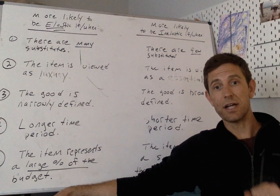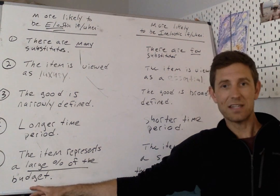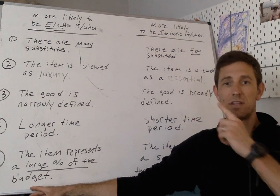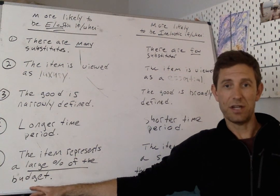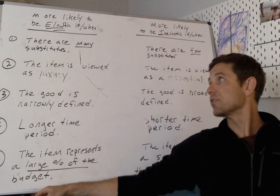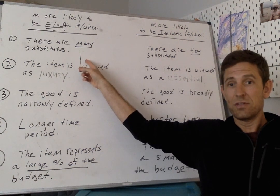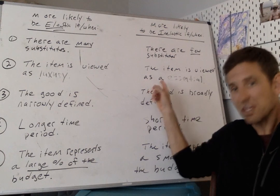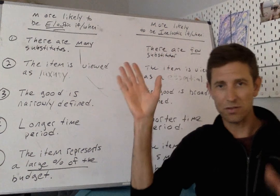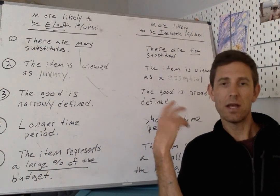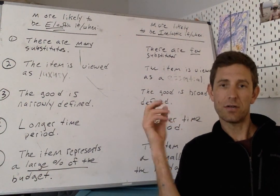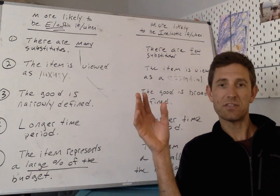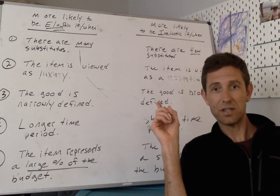Alright, so there you go. Those are the five criteria that you guys should know about. One last thing here to keep in mind is that it's possible that the different criteria can give you a different suggestion about elasticity of the good. In other words, you could have an item for which there's many substitutes and it's suggesting that it's elastic, but it's also something that people view as essential, suggesting it's inelastic. And so the rules of thumb sometimes work against each other. And so in that case in particular, it's really important to look to the numbers and see if you can draw some conclusions based on data rather than the patterns that we see overall.